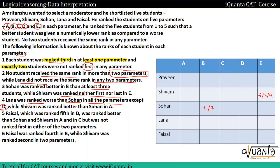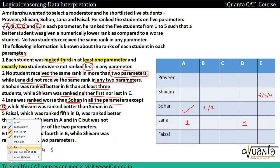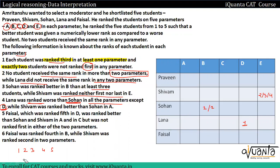Lana was ranked worse than Sohan in all parameters except D. Since Lana gets all different ranks (one through five), when Lana gets rank one, that must be in parameter D — because in all other parameters Lana is worse than Sohan, and rank one cannot be worse than any rank. So Lana's rank one is in parameter D.